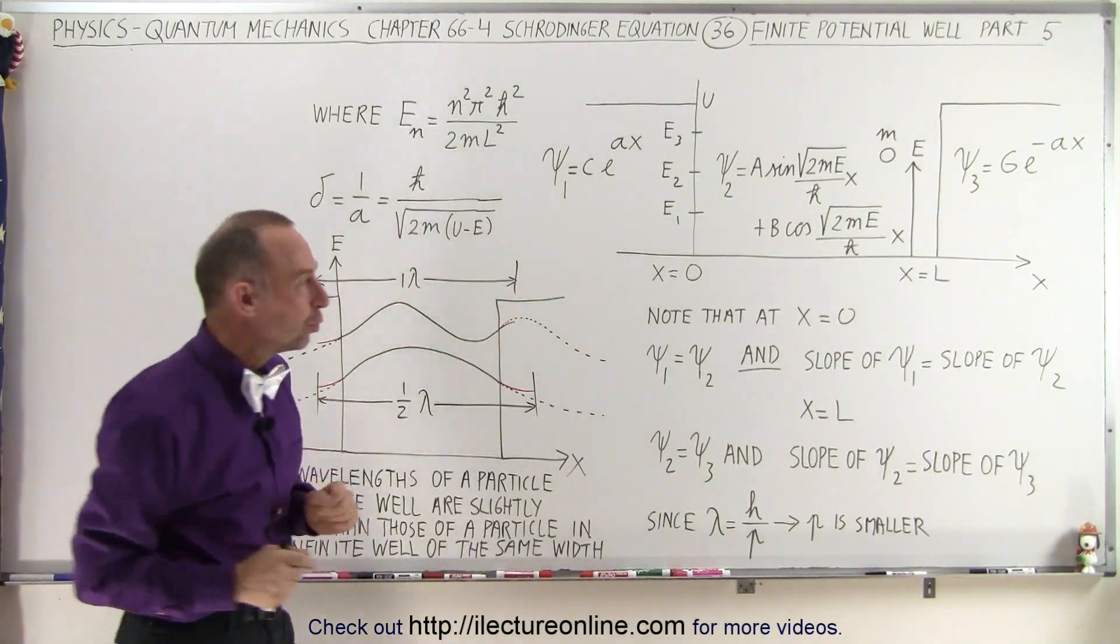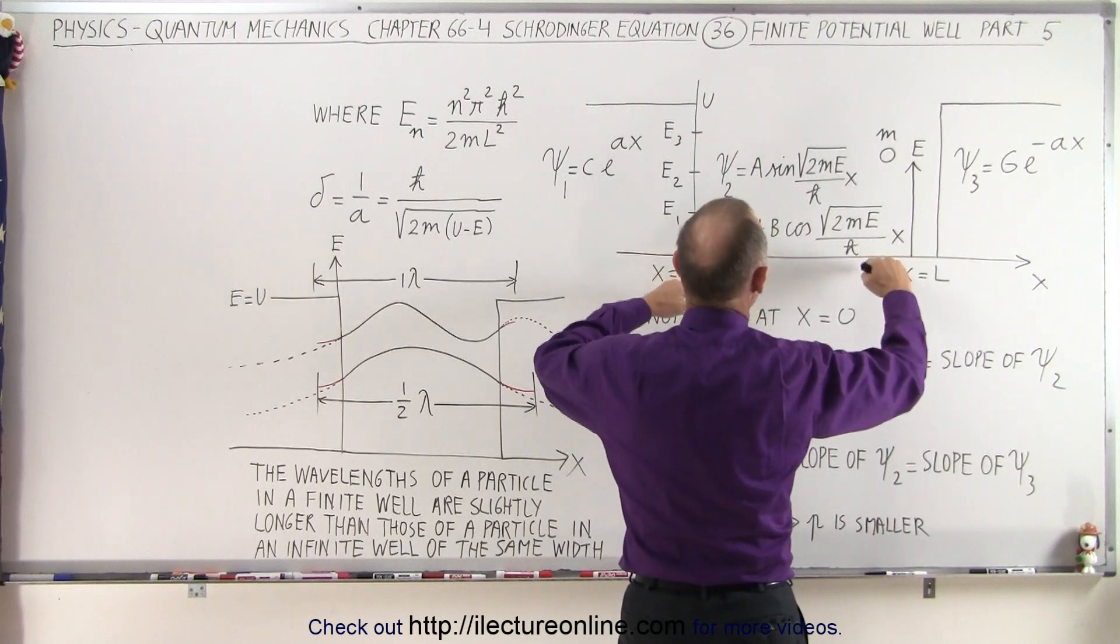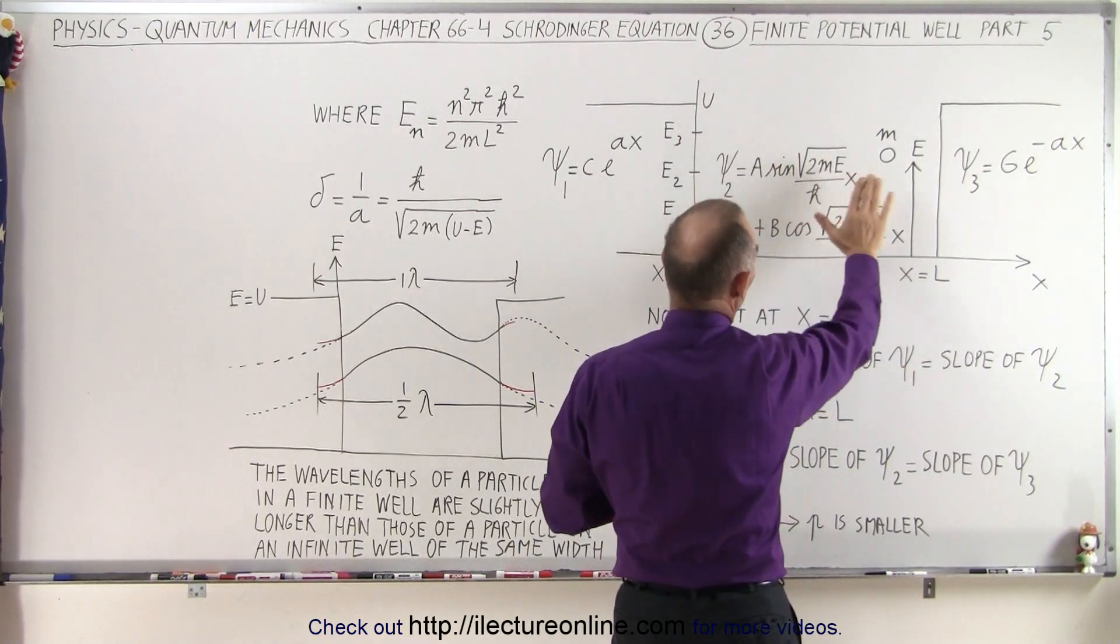And in region 2, where the particle has energy above the absolute floor, zero energy level of the floor, we can see that the equation will look sinusoidal, they'll have a sine and a cosine portion of that.